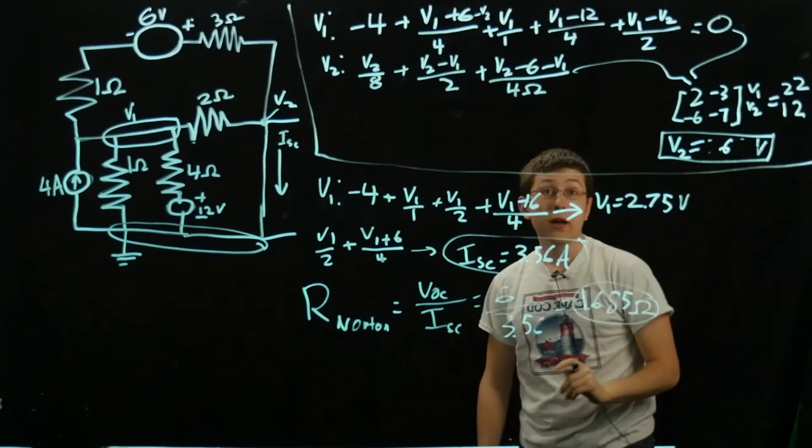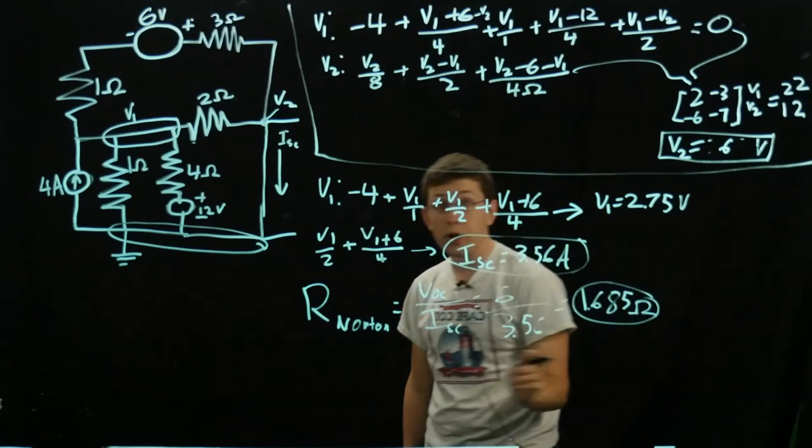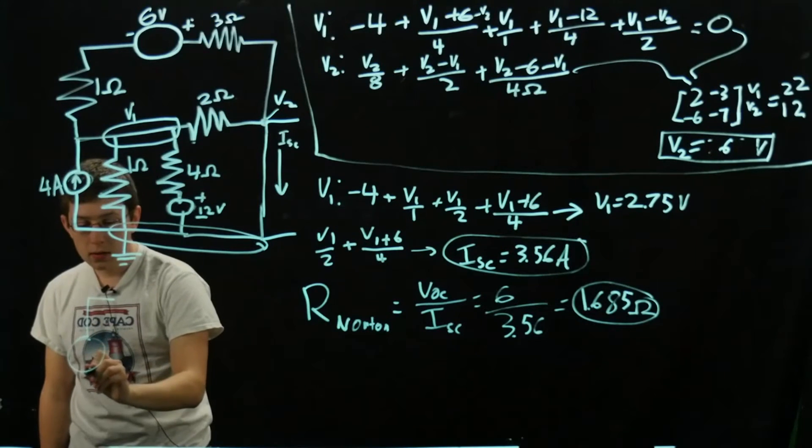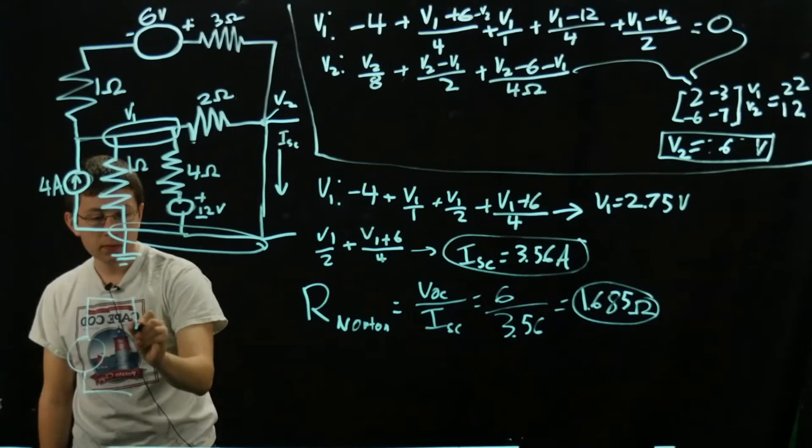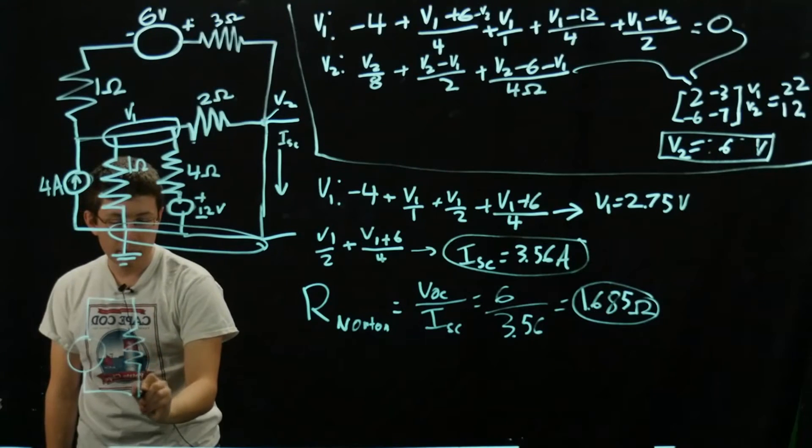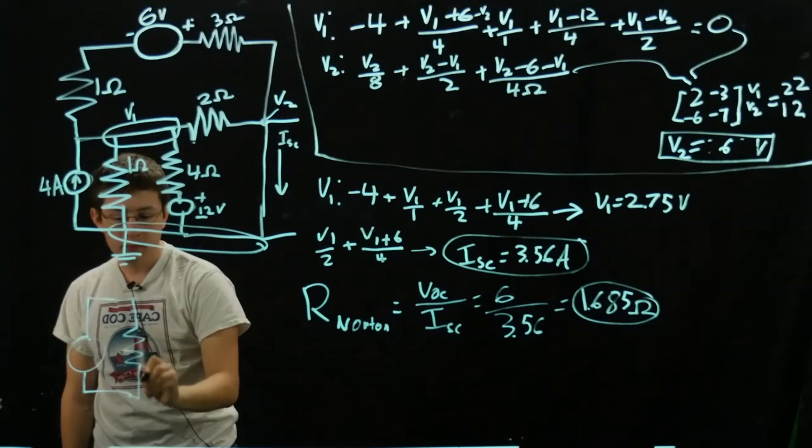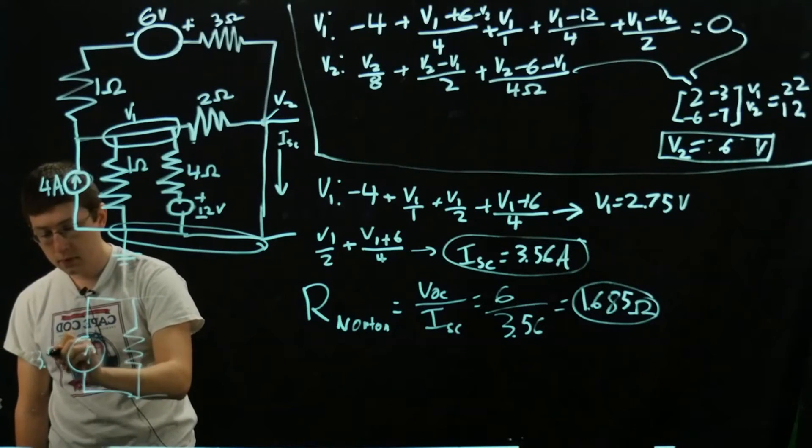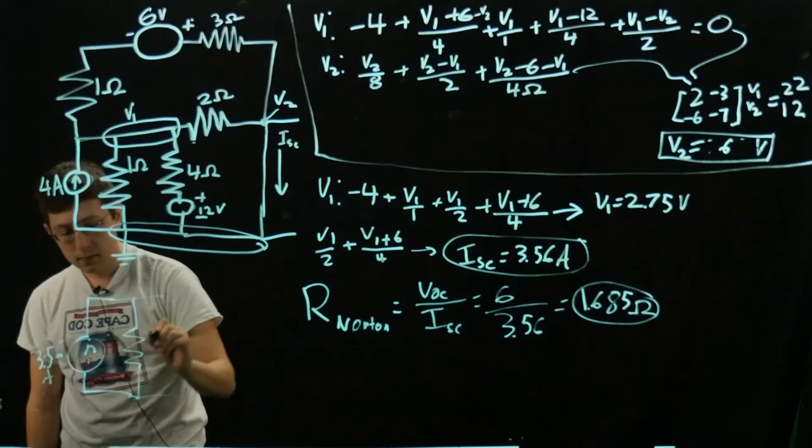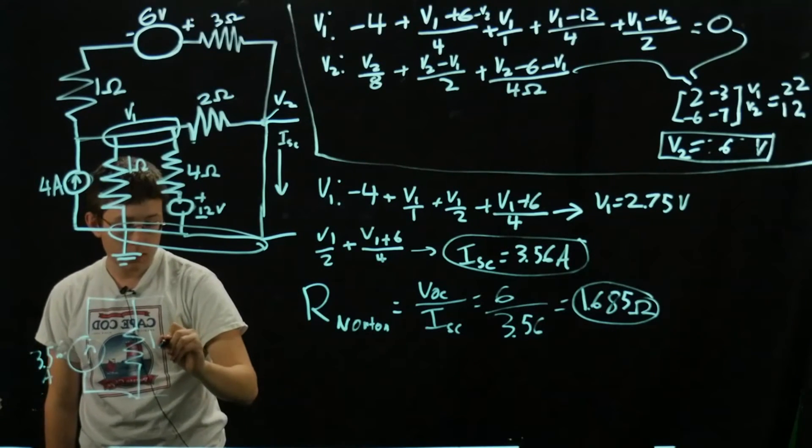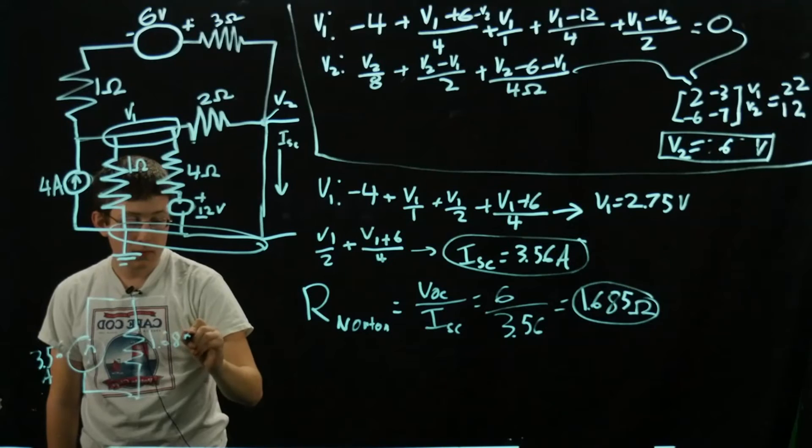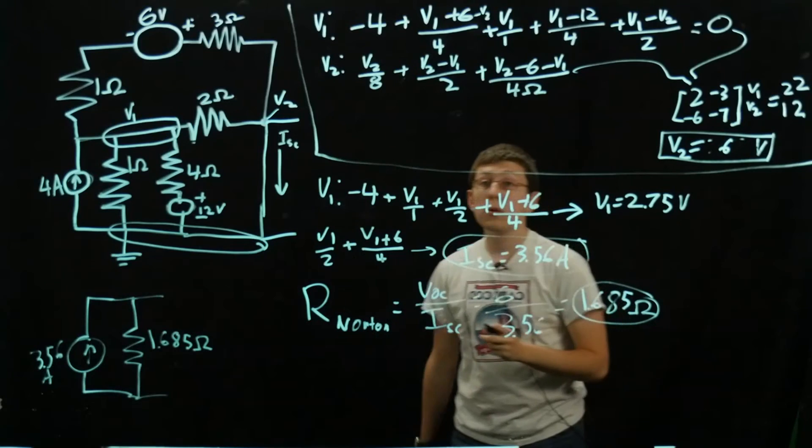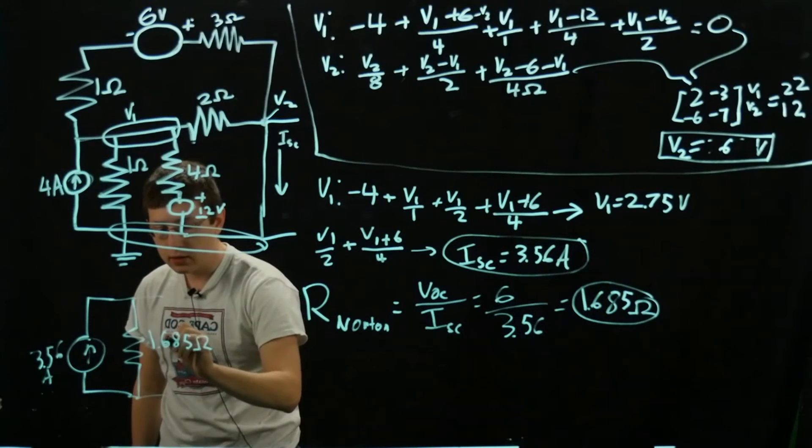Our final drawing, I'll draw it under here, will be just as follows: an independent current source with a parallel resistor and two terminals leading out. To finish up what we did here and summarize...